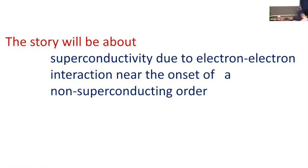The story will be pretty straightforward. I don't want to consider electron-phonon interactions, so it will be superconductivity due to electron-electron interaction near the onset of some other non-superconducting order — the story which all of you have heard many times. It's normally affiliated with the Kohn-Luttinger mechanism. Conventional Kohn-Luttinger is the story when you start with repulsive interaction and look at how this interaction is screened.